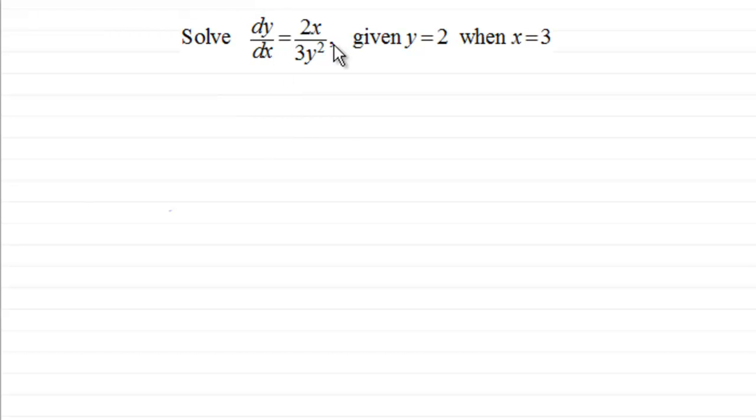So let's say that we've got this equation, solve dy/dx equals 2x over 3y squared. And we're given that y equals 2 when x equals 3. So to solve this, what we would need to do is separate the variables. We'd need to multiply both sides by 3y squared and remove the dx here.